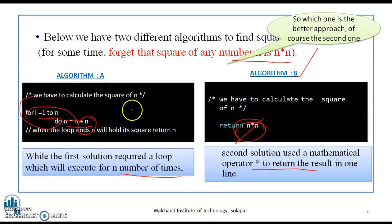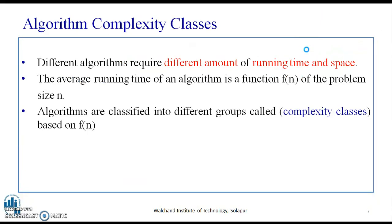As we can see here now, different algorithms require different amounts of running time and space. The average running time of an algorithm is a function f of n of problem size n. Based on f of n, algorithms are classified into different groups called complexity classes.